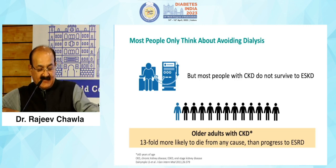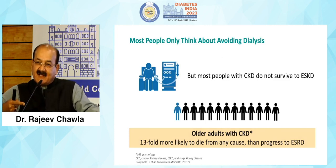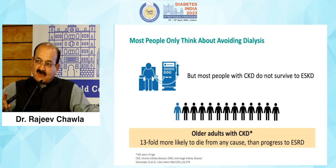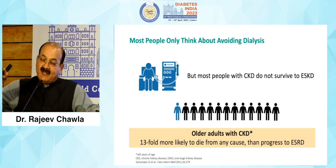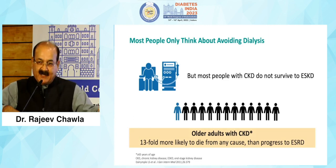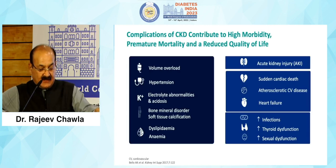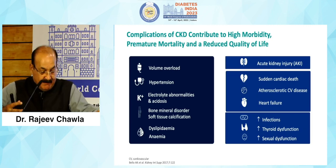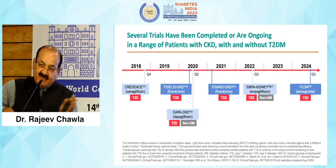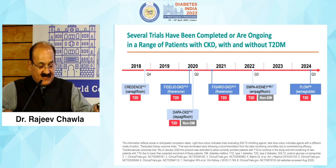Most people are afraid that having CKD or early diabetic nephropathy means they will ultimately end up on dialysis. But it has been seen that most of these patients unfortunately never reach that stage, because they tend to have much higher cardiovascular mortality and die much earlier — either from volume overload, accelerated hypertension, hyperkalemia, or many more things. So it is very important that these patients should be followed on a three to six month basis.